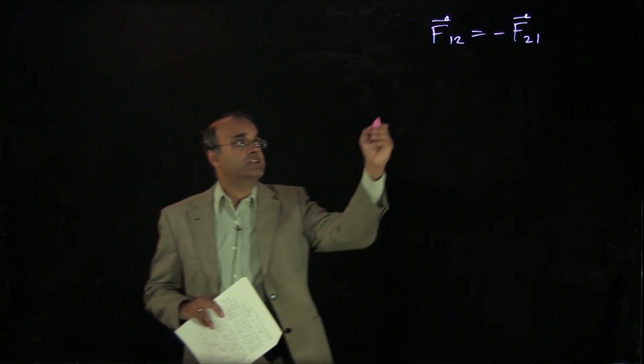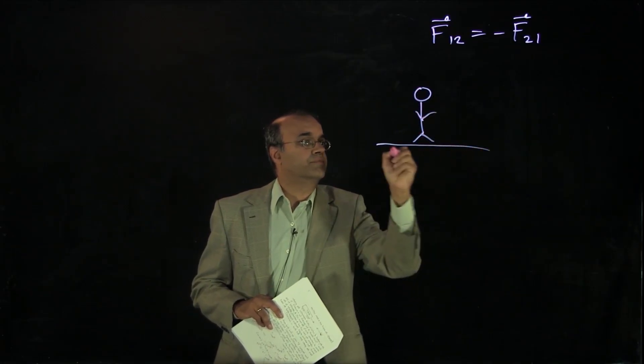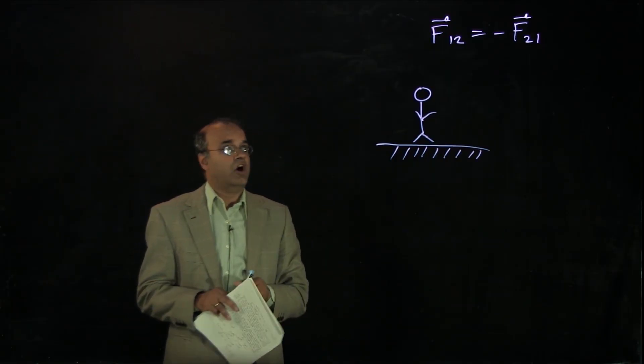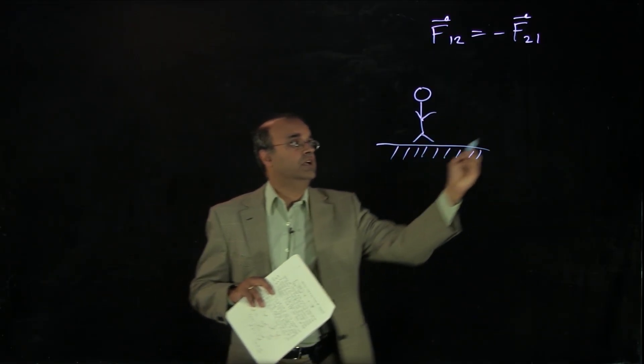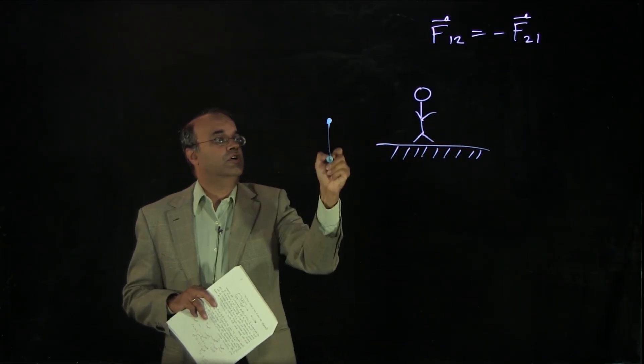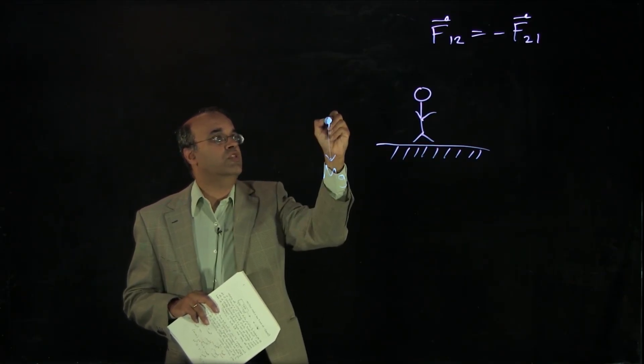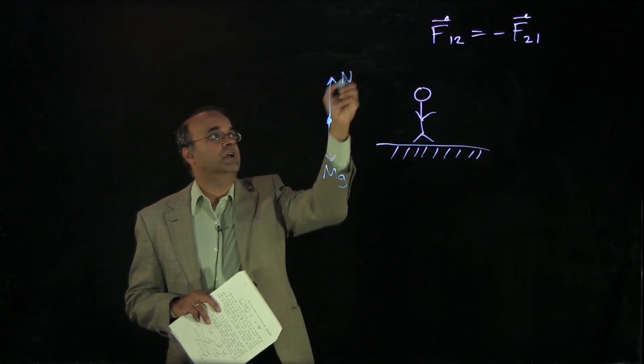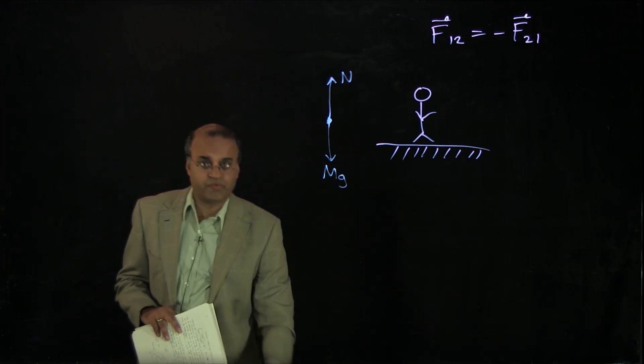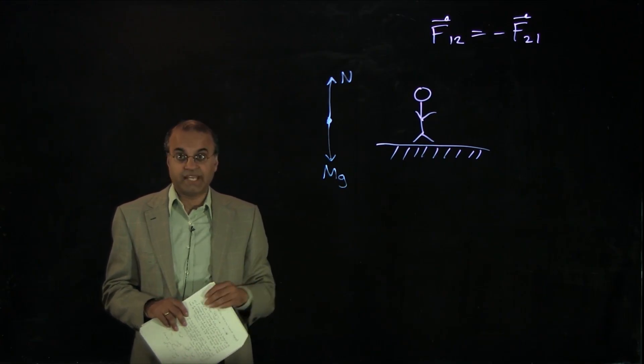The example I'll consider is, imagine a person standing on the ground. What are the forces acting on this person? I'll draw the force diagram here. There's gravity mg acting downwards, and there's a normal force upward exerted by the ground. And those two balance to give a net force of zero, which is why the person is standing on the ground and not sinking down into the ground.